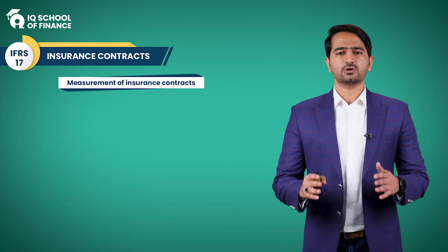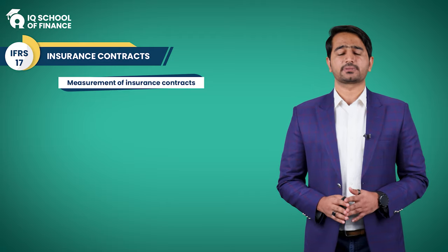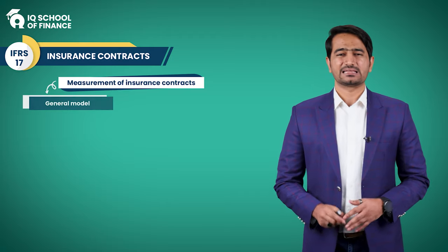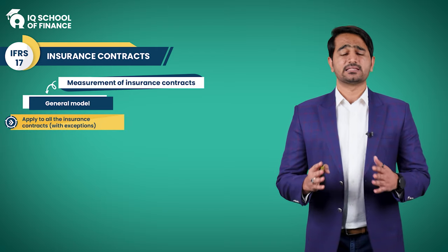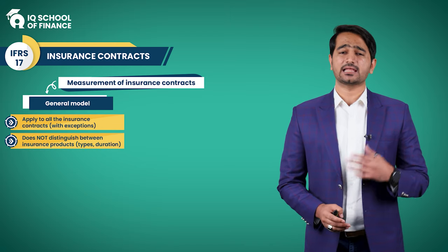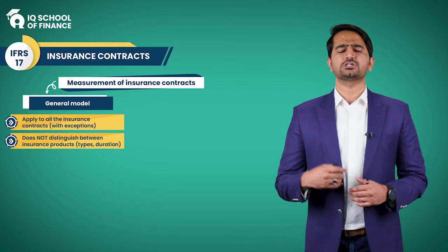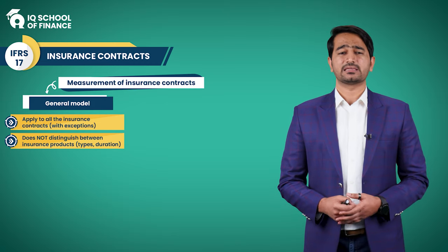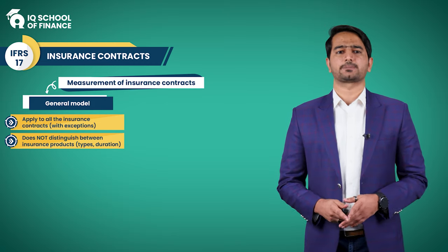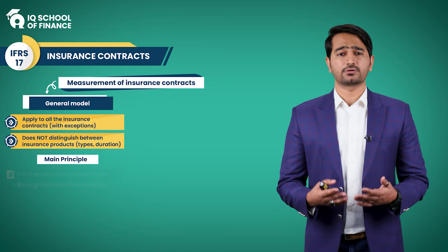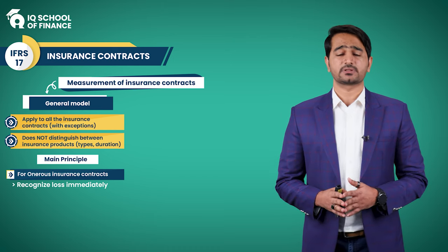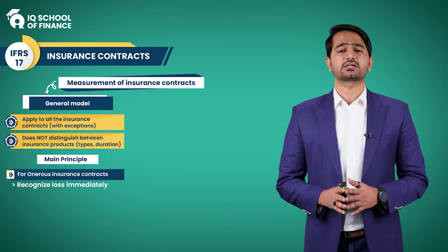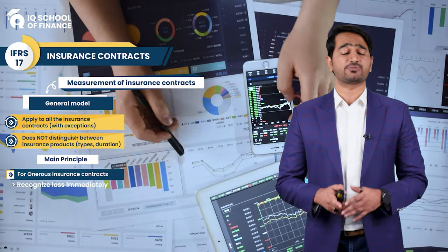Now let's discuss how to measure a group of insurance contracts. The primary model is the general measurement model, applicable to all insurance contracts with few exceptions. It does not differentiate between individual types, duration, short-term, long-term, life, or non-life insurance — it applies uniformly to all. The core principle concerns onerous insurance contracts — those loss-making or anticipated to generate losses from inception — for which IFRS 17 mandates immediate recognition of a loss in profit and loss at the time of initial recognition.